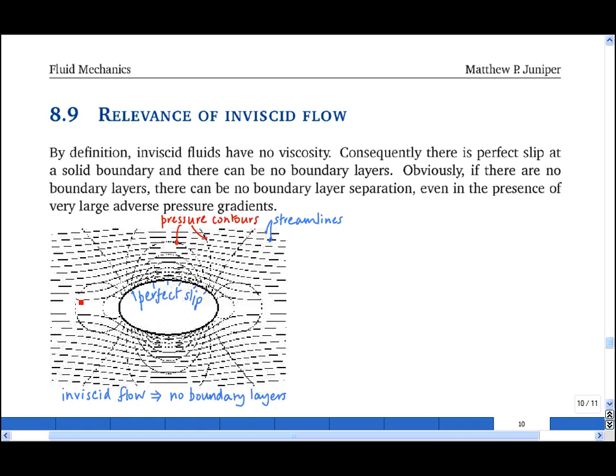So on the upstream side of the object, there is a high pressure stagnation point. Around the sides, where the flow is fast, there is low pressure. But at the back, and this is D'Alembert's paradox, there is another stagnation point and a region of high pressure, and therefore there is no net force in the streamwise direction.